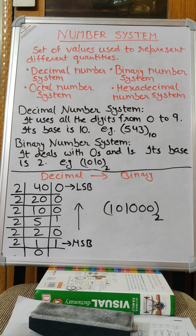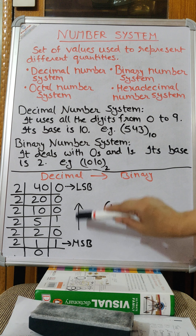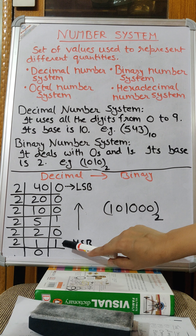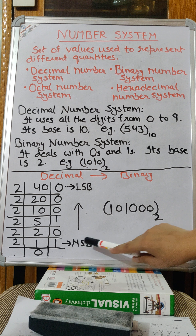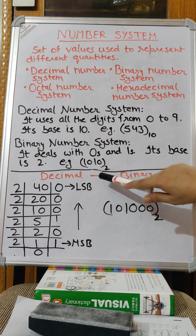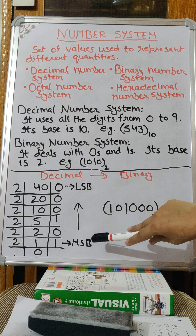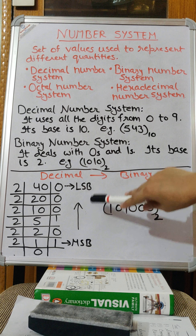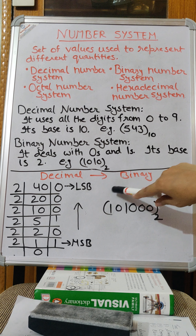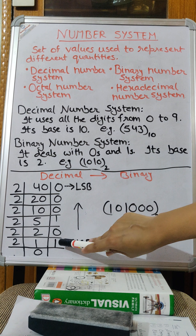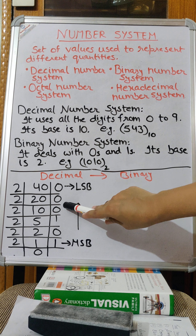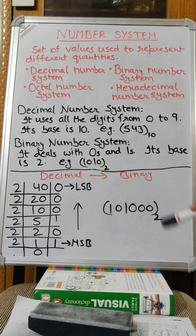Now how will you write the binary? You write the binary from bottom to top. The bit at the bottom is the most significant bit, and at the top you get the least significant bit. So the binary number written from most significant bit to least significant bit is 1 0 1 0 0 0. This is the binary representation of 40.